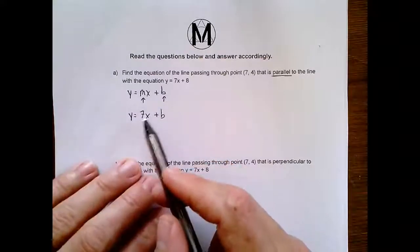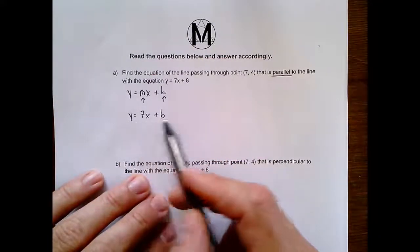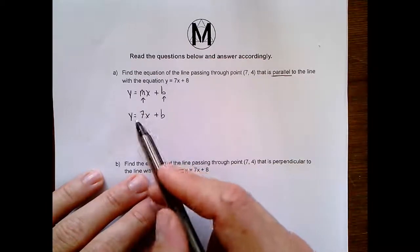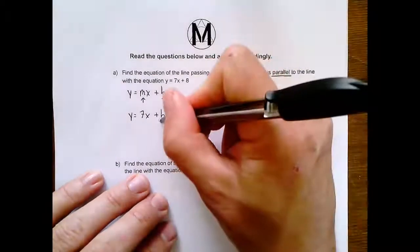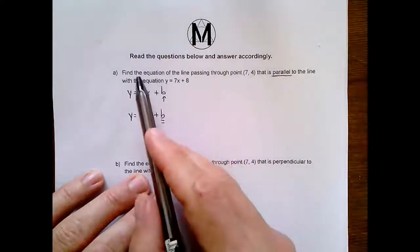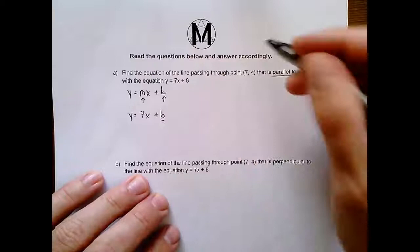So if you think about this, at this point we have one, two, three unknowns. And so we've got to get rid of two of those unknowns and isolate this b value. And we do that because we know that the line we're looking for passes through this point (7,4).